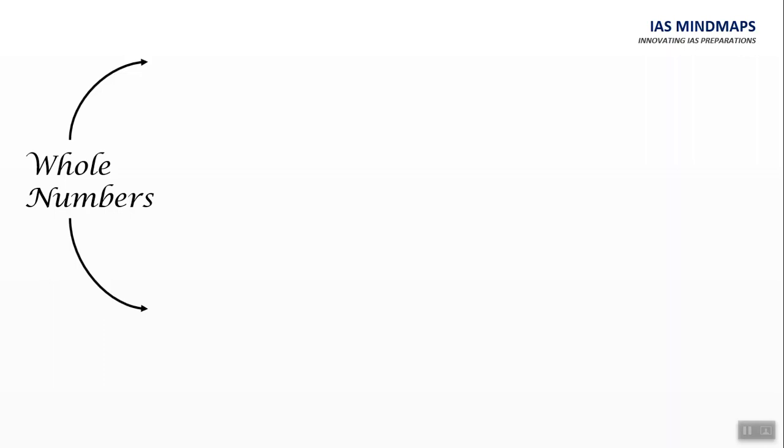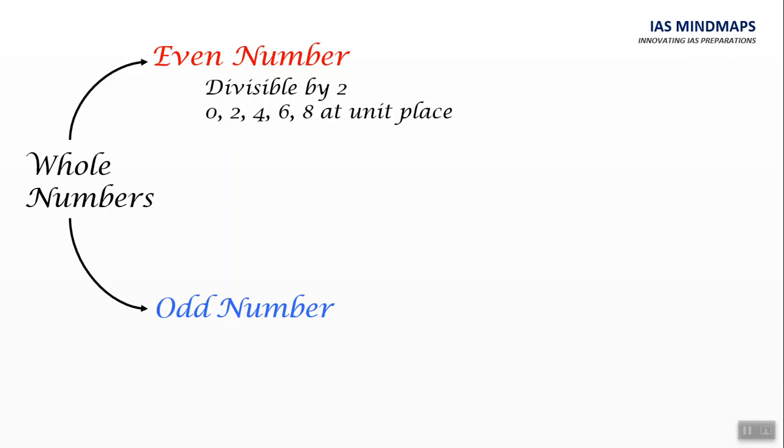So, in whole numbers, we have two sub-parts. First is even numbers and odd numbers. As we all know, even numbers are divisible by 2. That means, at its unit place, we have 0, 2, 4, 6 or 8.